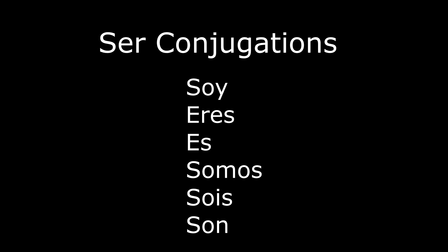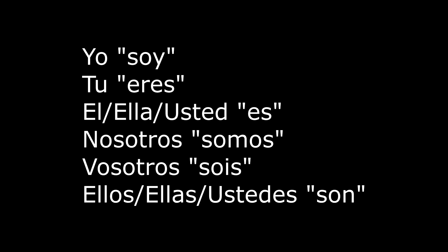Keep in mind that ser has five conjugations: soy, eres, es, somos, sois, and son, depending on the noun you are using. For example: yo soy, tú eres, él/ella/usted es, nosotros somos, vosotros sois, ustedes/ellos son. To know when to use ser, ask yourself if you are referencing date, occupation, characteristic, time, origin, or relation.